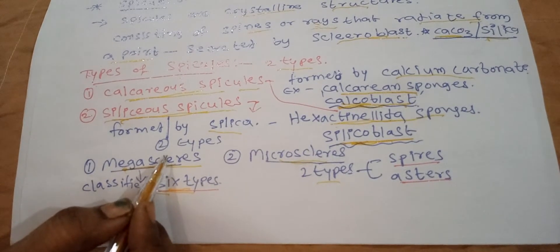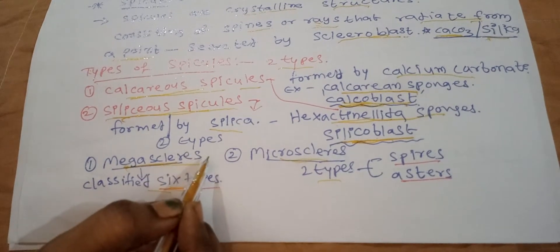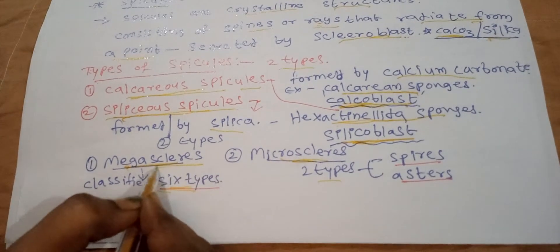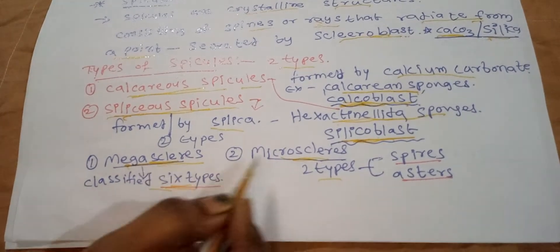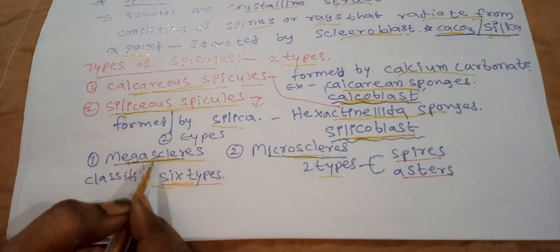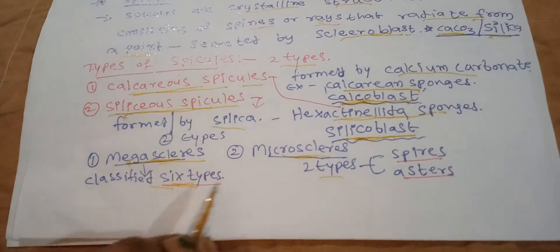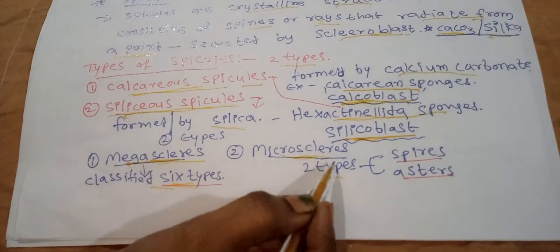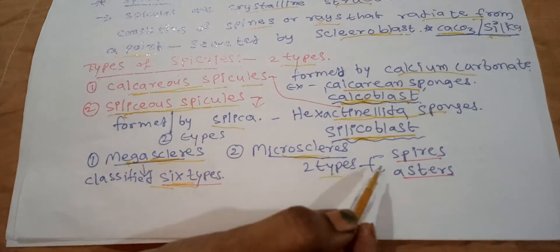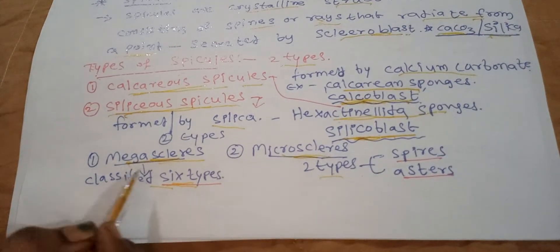According to size, spicules are of two types: megascleres and microscleres. Megascleres are classified into six types; microscleres are classified into two types — spears and asters.